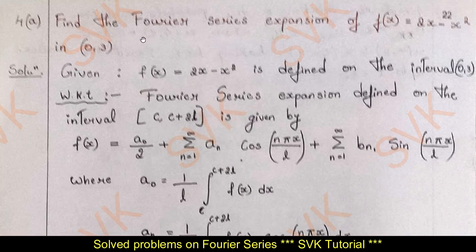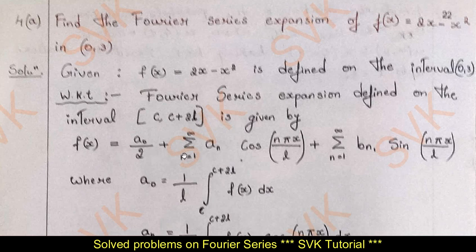The question is as follows: find the Fourier series expansion of f(x) = 2x − x² in the interval [0, 3]. We know that the Fourier series expansion defined for the interval c to c + 2l is given by f(x) = a₀/2 + Σ aₙ cos(nπx/l) + Σ bₙ sin(nπx/l).